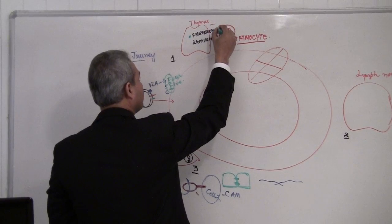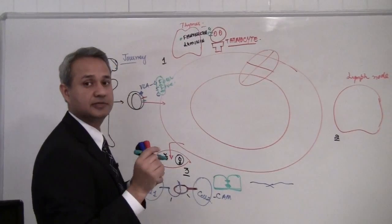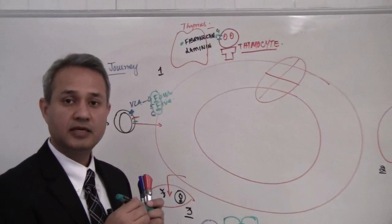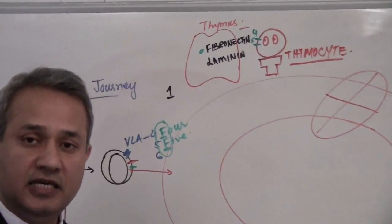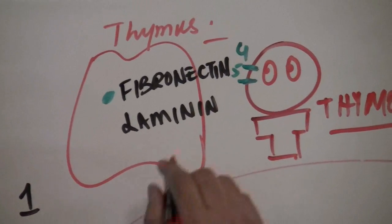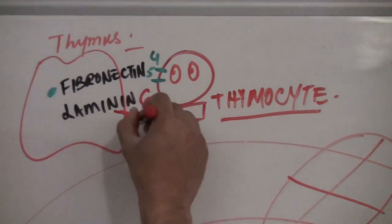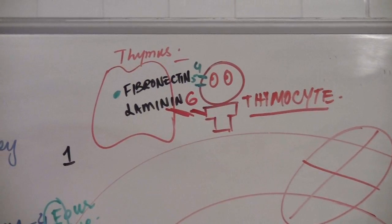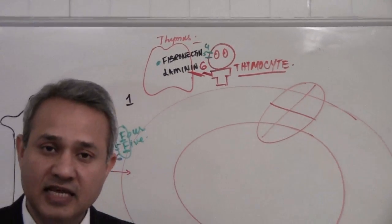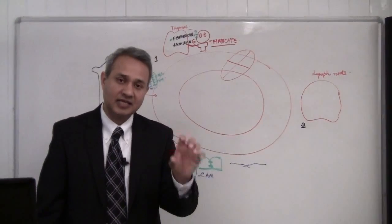The VLA-4 and 5 connect with fibronectin. That is the first one. The second is laminin. So VLA-6 connects with the laminin. VLA-4, 5 and 6 allow a T cell to home into the thymus and stick there.